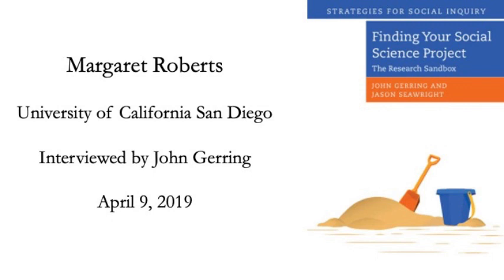Can you walk us through an example of how this has happened — where you discovered a new dataset and what happened from there? One example is I was doing some work with Will Hobbs, a former graduate student at UCSD who is now an assistant professor at Cornell. We realized there were a whole bunch of Twitter posts geolocated to China, which was very interesting because Twitter is blocked in China. So who were these people geolocated to China, and what could these posts tell us about how people were interacting with the internet?